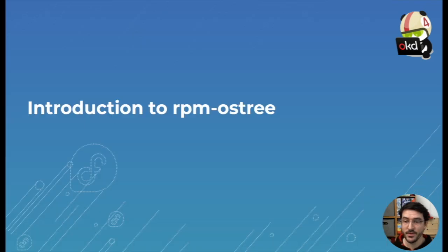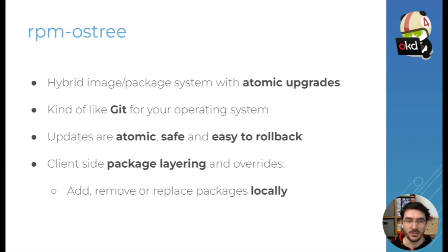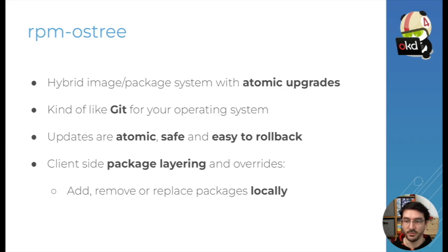Let's move ahead with a short introduction to RPM-OSTree, which is core to how Fedora CoreOS works. RPM-OSTree is a hybrid image-package system that enables automatic upgrades. It functions a little bit like Git but for your operating system — it stores all the files of the operating system in a repository, similar to a Git repository. The updates themselves are atomic, safe, and easy to roll back. You can have several versions of your operating system installed, and if one fails to boot or has a critical bug, you can always roll back to the previous version.